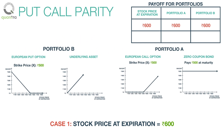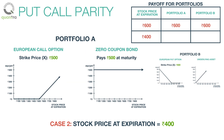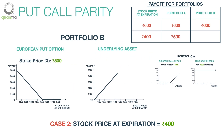Now suppose the stock price falls to 400 rupees at expiry. For portfolio A, the call option is out of the money and expires worthless, and the worth of the zero coupon bond is 500 rupees. Hence the worth of portfolio A is 500 rupees at expiry. For portfolio B, the payoff of the put option is 100 rupees — that is 500 rupees minus 400 rupees — and the stock price is 400 rupees. Hence the total worth of portfolio B is also 500 rupees at expiry.